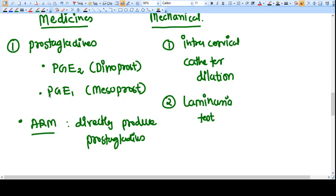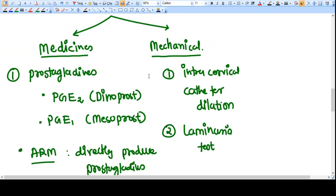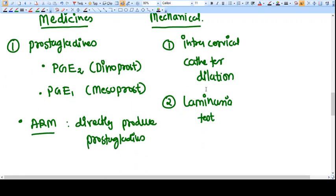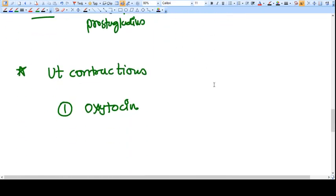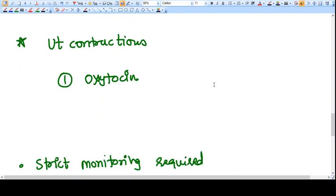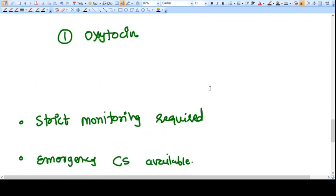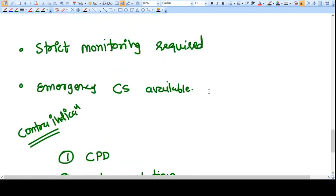Mechanical stretching of the cervix - we can go for intracervical catheter dilatation or laminaria tent that will go inside the cervix and stretch it. After proper cervical ripening, we need regular uterine contractions, and that we can achieve with oxytocin.